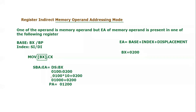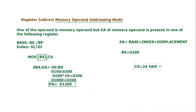What this instruction says: CX is the source operand and [BX] in memory operand is the destination operand. So the value of CX should be moved to the memory location pointed by BX. CX is a 16-bit register, so there will be 16 bits — two bytes. Let's say the CX value is 245A. That value is stored in CX. Since every memory location can hold only an 8-bit value, 5A will go to address 01200.